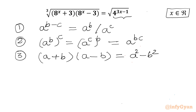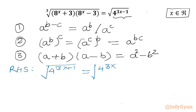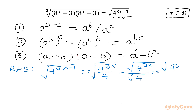Let us apply, and I will begin with RHS first. RHS is square root of 4^(3x − 1). Using property 1, I can write this as square root of (4^(3x) divided by 4). Now I can write the numerator and denominator separately: 4^(3x) divided by root 4. Now we can write the numerator as (4³)^x.